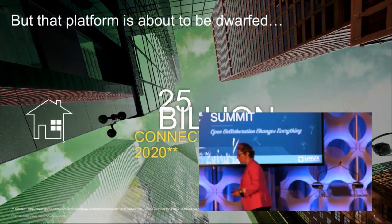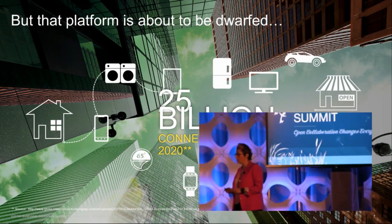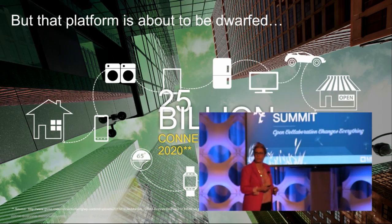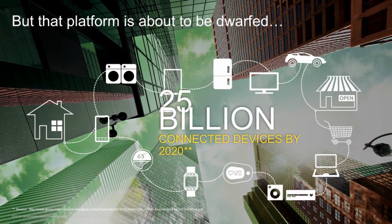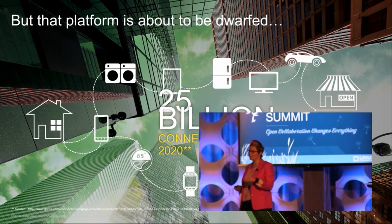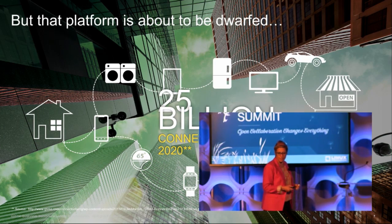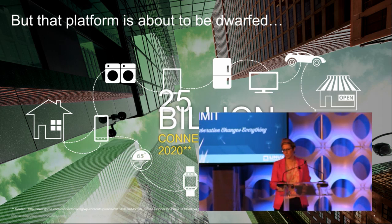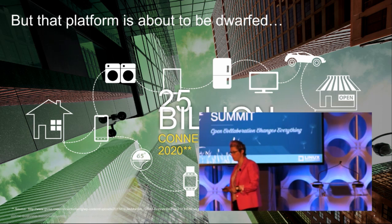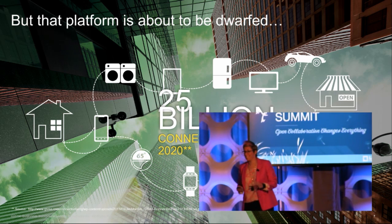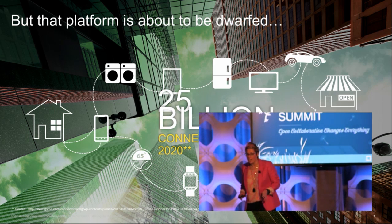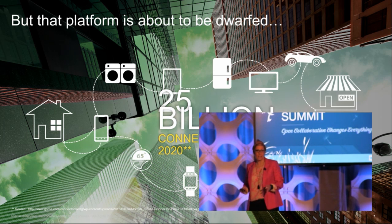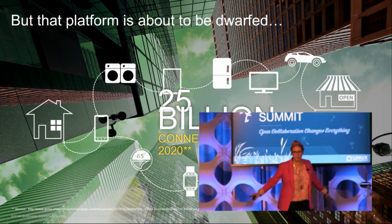Then, about a year and a half ago, we started looking at this other trend that people have been talking about a lot called IoT. And it turns out that mobile platform that is so huge is about to be dwarfed. Depending on who you read, there are lots of opinions — I think this one's from GSMA: 25 billion connected devices by 2020. Cisco's numbers are even bigger. Some people say trillions. Bottom line is, a lot. There are going to be a lot of connected devices as you start to get all of the physical objects around us connected.